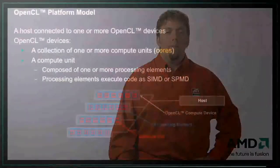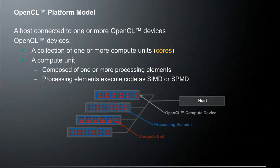Let's talk about the OpenCL platform model. A host is connected to one or more OpenCL devices. On the bottom of the slide, we have what is a host — so the host would be just your computer. That's any CPU that runs your standard operating system and your application. So that host is going to be connected to one or more OpenCL devices, and an OpenCL compute device would be something such as a GPU, a DSP, or even a multicore processor.